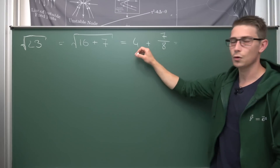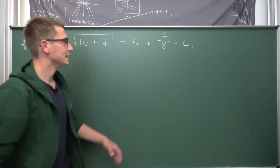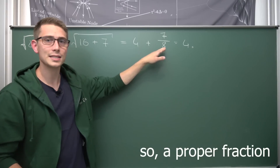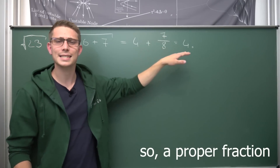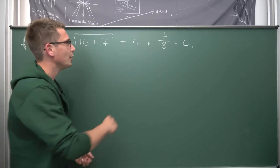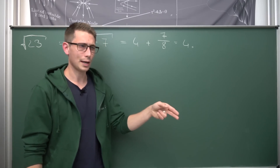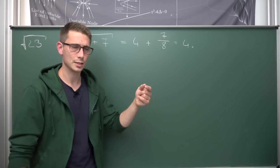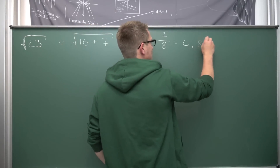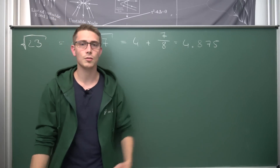What we get here is 4 point something. The fraction is always going to be less than 1, giving us a decimal part. Now 7 over 8: one eighth is 0.125, so times 7 gives us 0.875. So our approximation for the square root of 23 is 4.875.